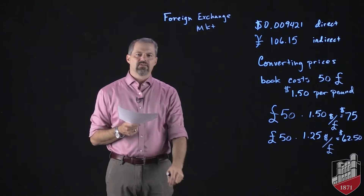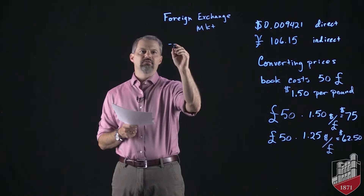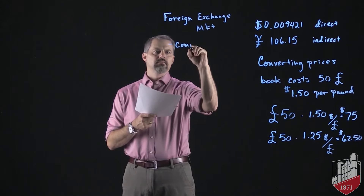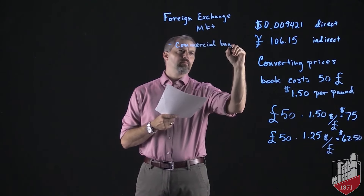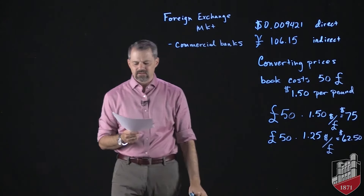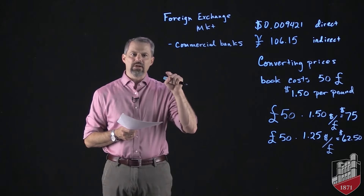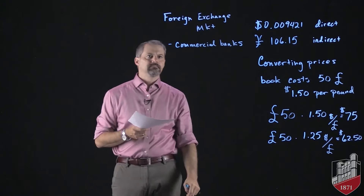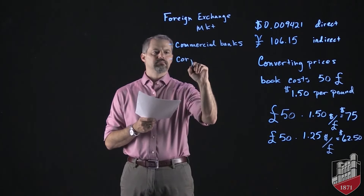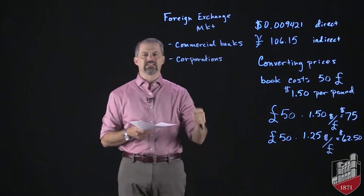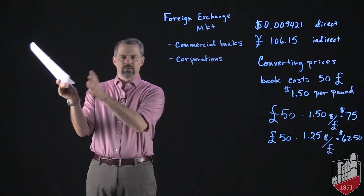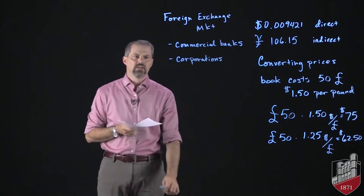Let's talk about the market where that happens. The foreign exchange market has several participants buying and selling currencies. The biggest one is commercial banks — banks dealing with corporations are going to be transacting a majority of foreign exchange transactions. We call any exchange between two banks interbank trading, and commercial banks account for a vast majority of transactions. There are also corporations that need to exchange currencies because they may have to buy inputs from another country and pay for those inputs with that country's currency.